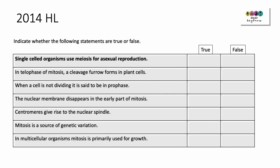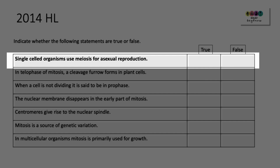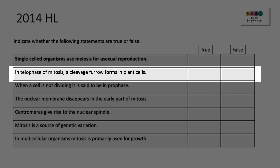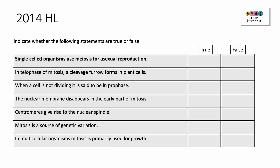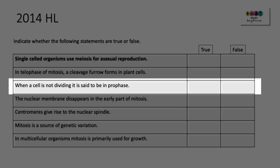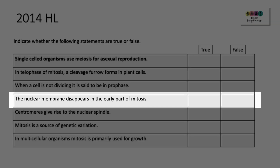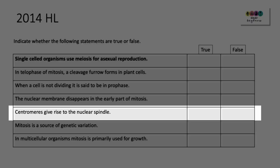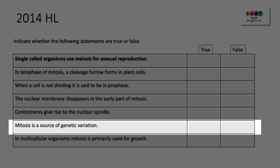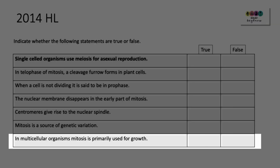2014: Indicate whether the following statements are true or false. Single-celled organisms use meiosis for asexual reproduction — false, they use mitosis. In telophase of mitosis, a cleavage furrow forms in plant cells — false, a cleavage furrow only forms in animal cells. When a cell is not dividing, it's said to be in prophase — false, it's in interphase. The nuclear membrane disappears in the early part of mitosis — true. Centromeres give rise to the nuclear spindle — false, centromeres are found in chromosomes. Mitosis is a source of genetic variation — false, that's meiosis. In multicellular organisms, mitosis is primarily used for growth — true.